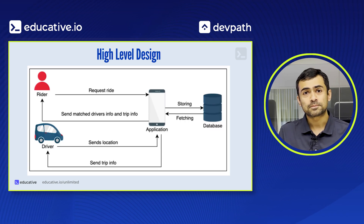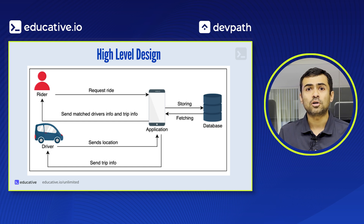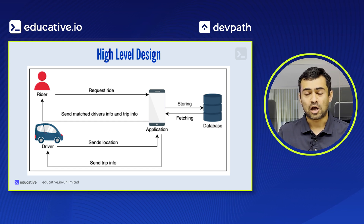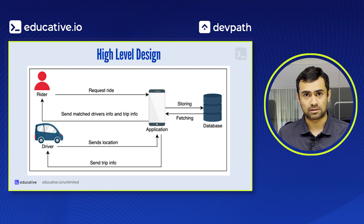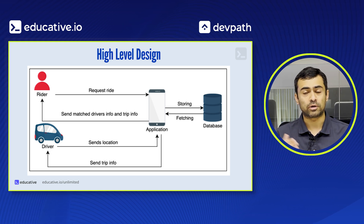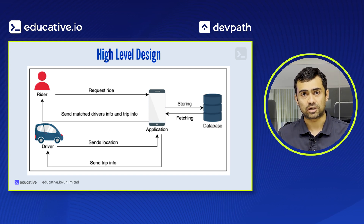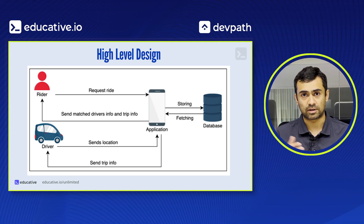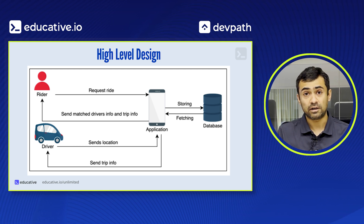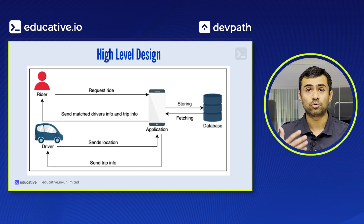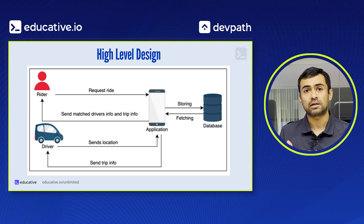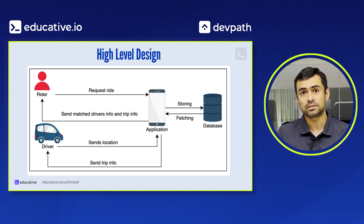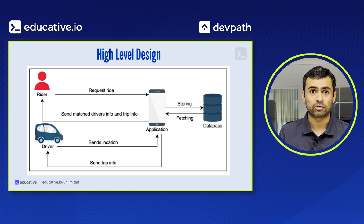Then comes the overall high-level design. How are servers going to interact with your back-end storage systems? How are those storage systems going to interact with caching, queuing services, search services, and identifier creation services? How are all of those services going to work together to create an amazing experience for your riders and drivers?